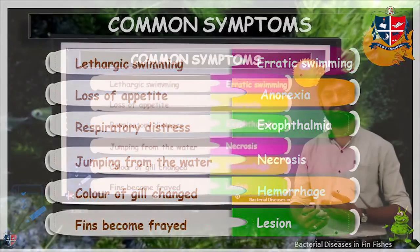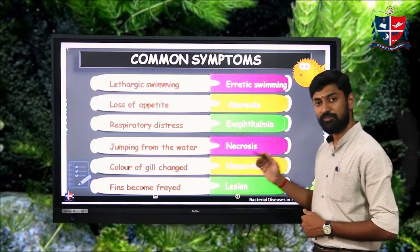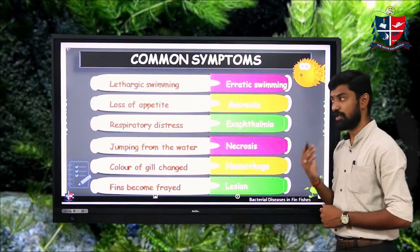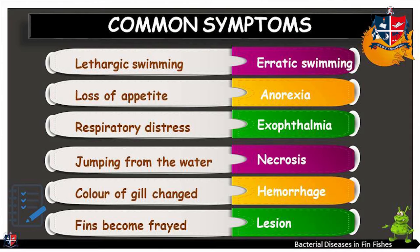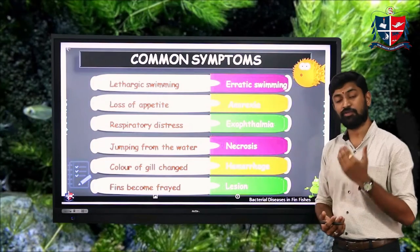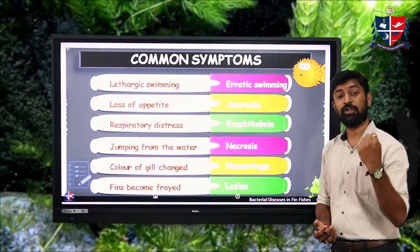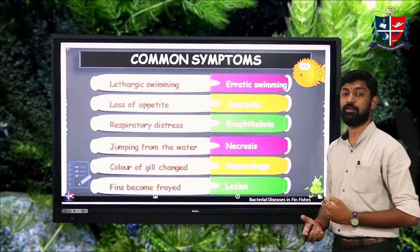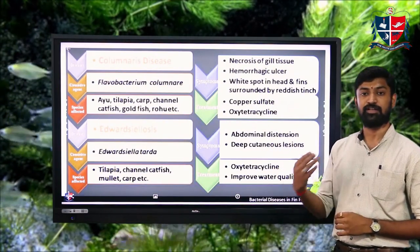The common symptoms of bacterial diseases in fin fishes are lethargic swimming, erratic swimming, loss of appetite (anorexia), respiratory distress, exophthalmia (bulging of eyes), fishes jumping out of water, necrosis (tissue death), color change of the gills, mucus production, hemorrhage, frayed fins, and lesions on the body surface.